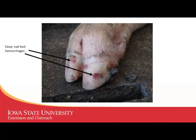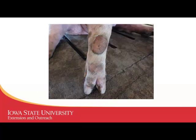We also tend to see deep nail-bed hemorrhages. A few weeks into this outbreak, that was something we noticed prominently. We know the virus has an affinity for tissues in and around the coronary bands and hoof — it almost looks like somebody hit their thumb with a hammer, getting that deep bruise. These tend to be more reddish than dark bruising color. We also saw hygromas — where pigs were crawling to the feeder, you start to get rough skin and tend to lose some hair off that area as well.